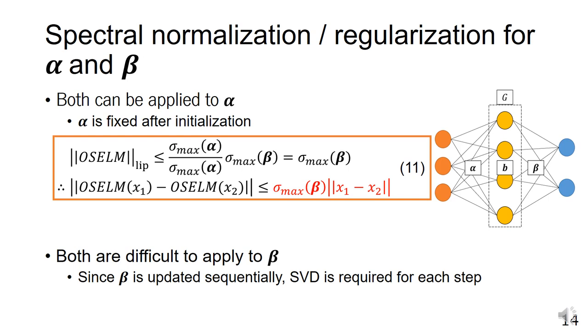For β, we consider that both spectral regularization and spectral normalization are challenging to apply. The reason for this is that β is updated at each step by sequential learning, which requires the computation of costly singular values each time.